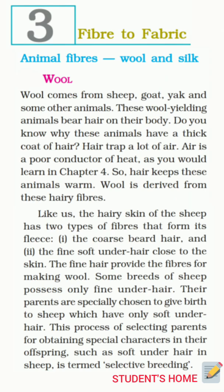Like us, the hairy skin of the sheep has two types of fiber that form its fleece. Number one is the coarse beard hair, and number two is the fine soft under-hair close to the skin. The fine hair provides the fibers for making wool. Some breeds of sheep possess only fine under-hair, and their parents are especially chosen to give birth to sheep which have only soft under-hair. This process of selecting parents for obtaining special characters in their offspring, such as soft under-hair in sheep, is termed selective breeding.